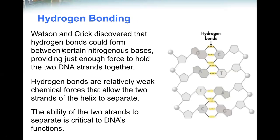Watson and Crick discovered that hydrogen bonds could form between certain nitrogenous bases, providing just enough force to hold the two DNA strands together. Hydrogen bonds are relatively weak chemical forces that allow the two strands of the helix to separate. The ability of the two strands to separate is critical to DNA's function. Hydrogen bonds separate them and they're bound together in pairs: guanine with cytosine, adenine with thymine.